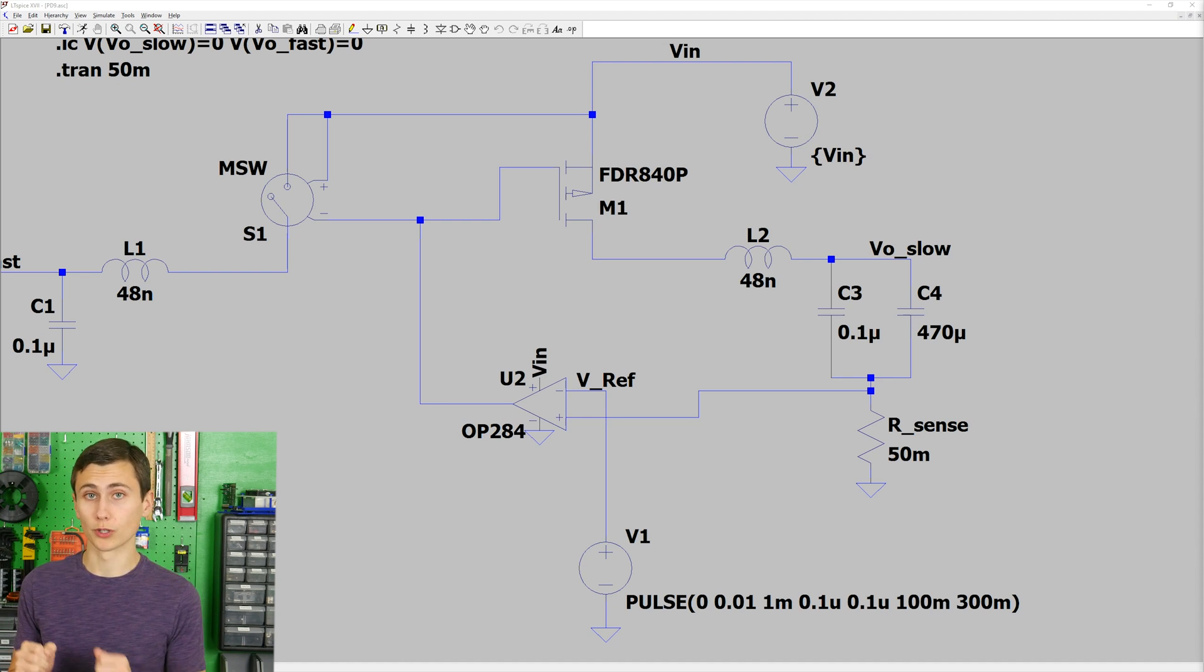There's a bit more work to be done before we can put this on our board. Like we mentioned before, this is a linear current regulation circuit, which means it's not terribly efficient. The linear regulating action of this circuit means that the FET will dissipate a bit more power during turn-on events, and a lot more power during an overcurrent fault.